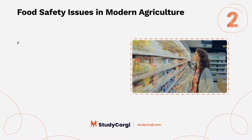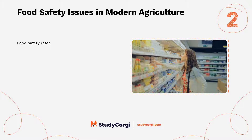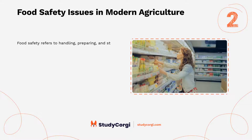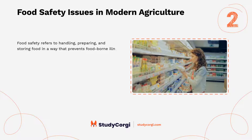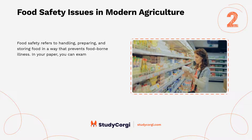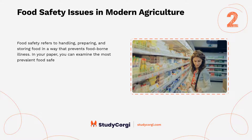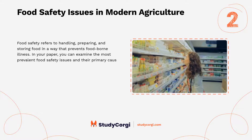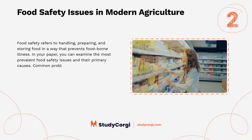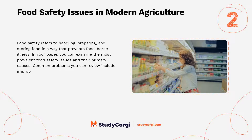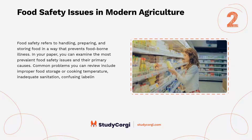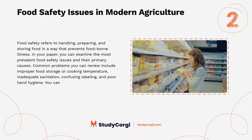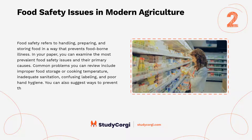Food safety issues in modern agriculture. Food safety refers to handling, preparing, and storing food in a way that prevents foodborne illness. In your paper, you can examine the most prevalent food safety issues and their primary causes. Common problems you can review include improper food storage or cooking temperature, inadequate sanitation, confusing labeling, and poor hand hygiene. You can also suggest ways to prevent these issues.